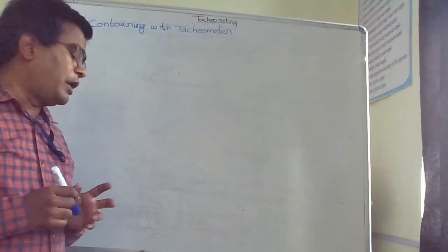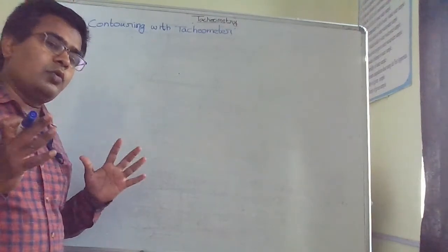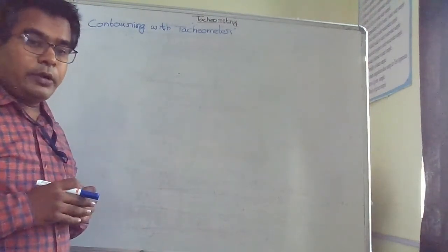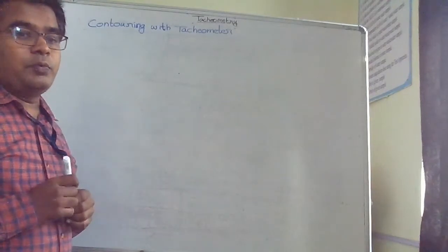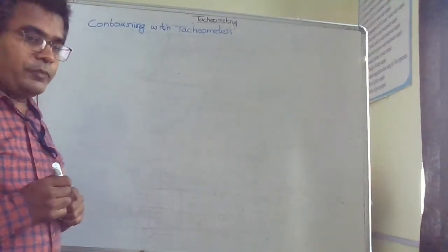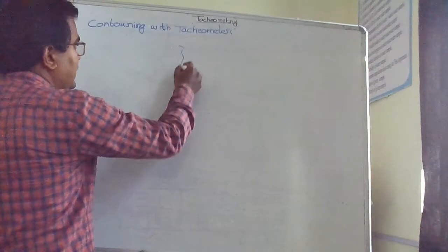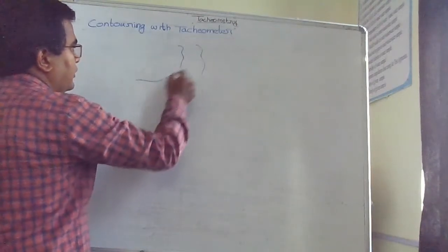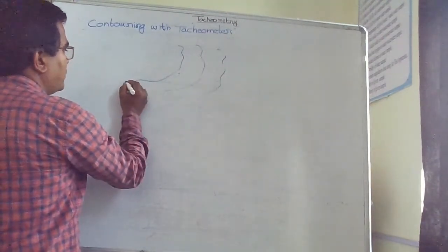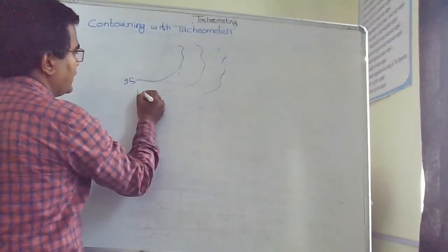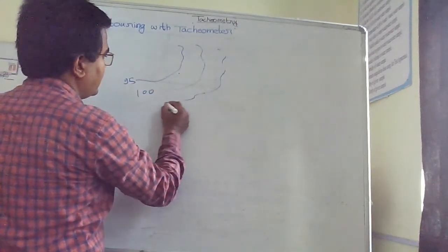When we have to do contouring of some hill, contouring with the tachometer is useful. Suppose there is a hill with increasing RL values - this is one hill we need to survey.